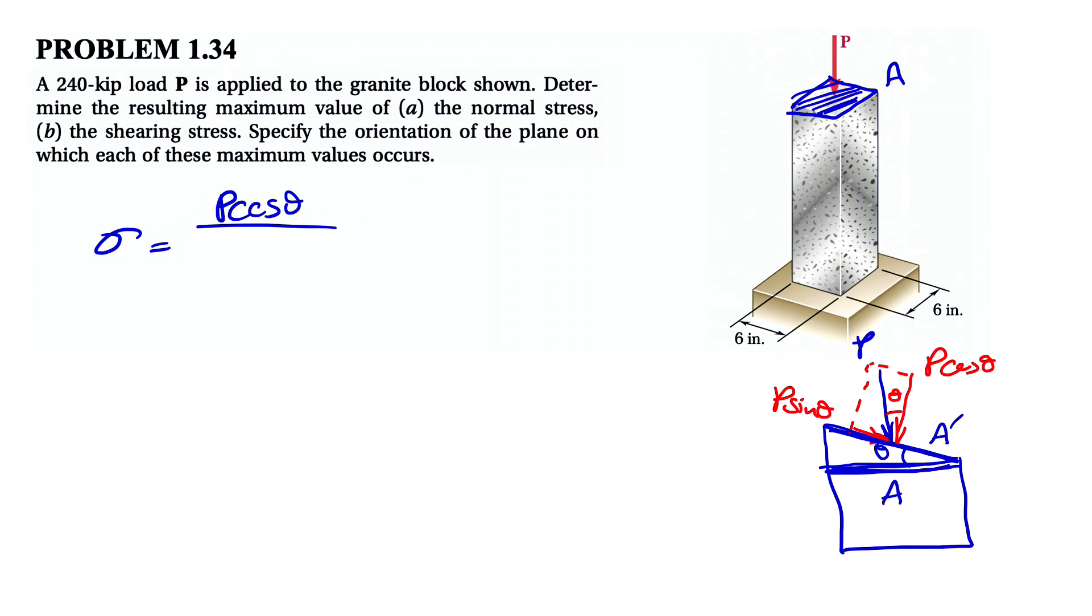So if you want to find the normal stress, we have P cosine of theta over A prime. And for shearing stress, we're going to have P sine of theta because that's our shearing force over the same surface A prime.